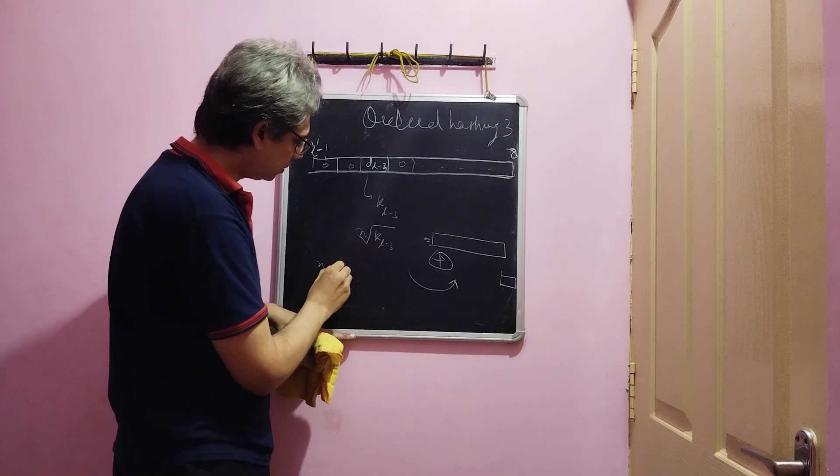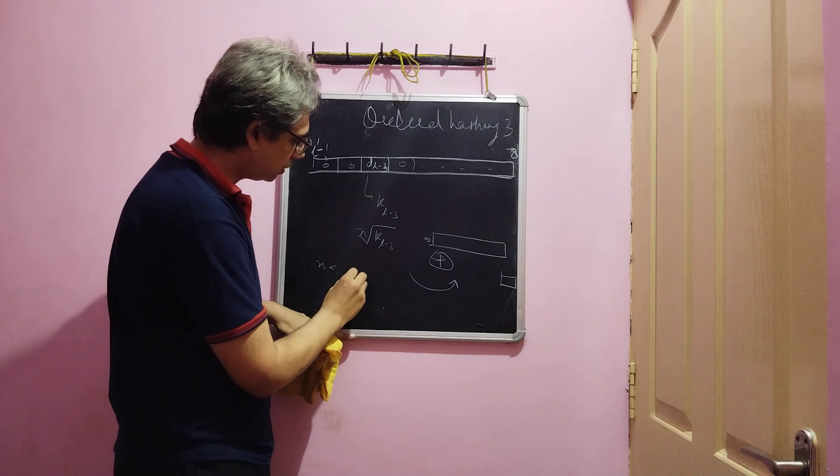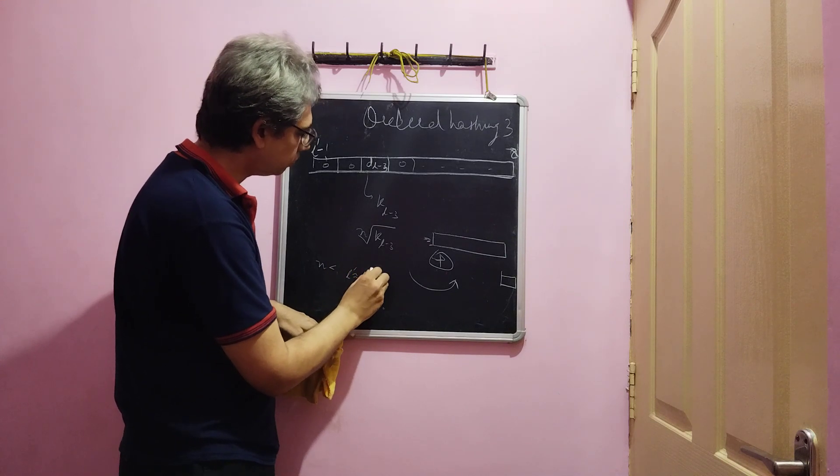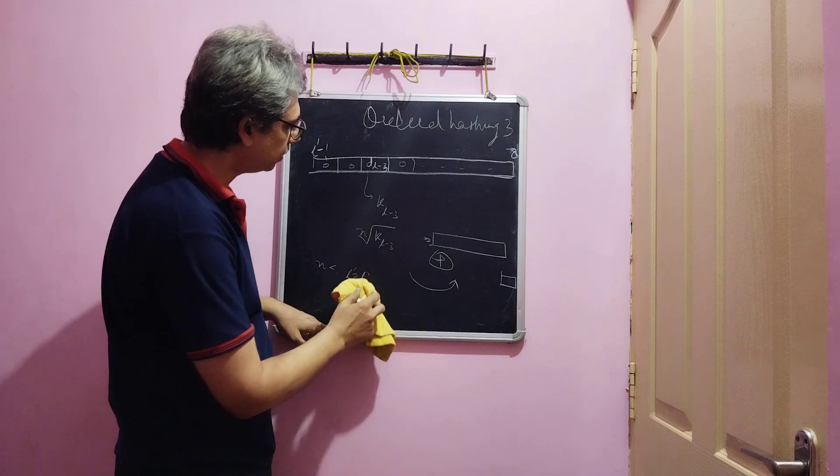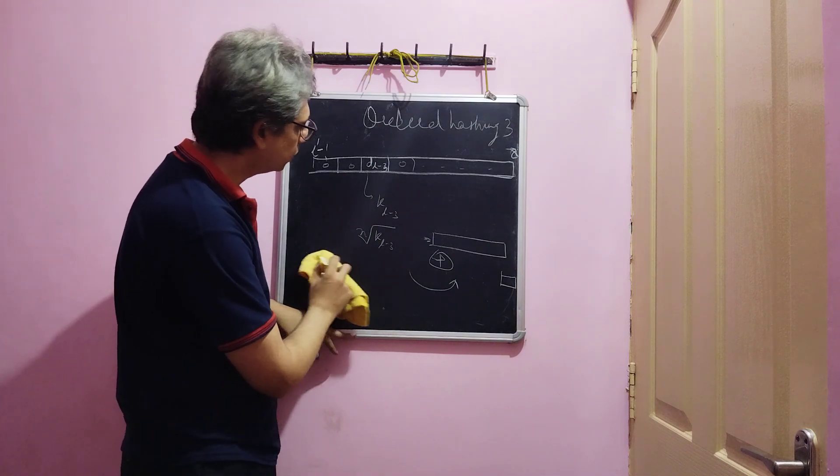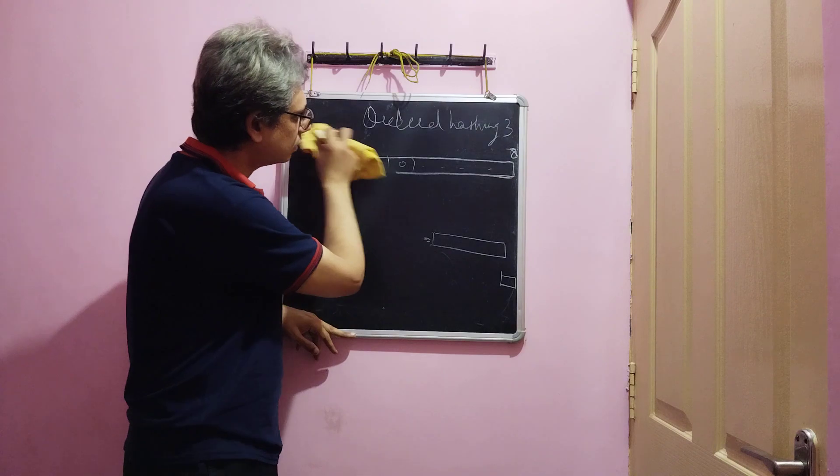n itself can come close to l, so l dash nearly equal to l square, close to that. It may not be as ideally suited for such a large value but it is very suited for strings.